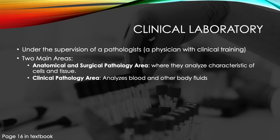Now let's talk about the two main areas: anatomical and surgical pathology, and clinical pathology. Both are closely related. To remember anatomical and surgical pathology, I think of 'anatomical' — it analyzes cells and tissue, just like a body in an anatomical position. We are looking at the cells and tissue that make up the body.